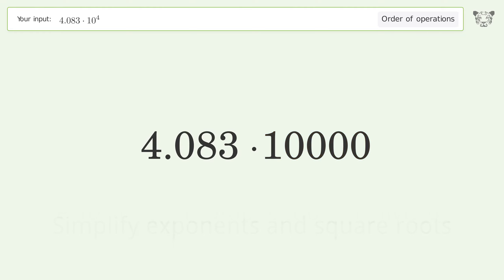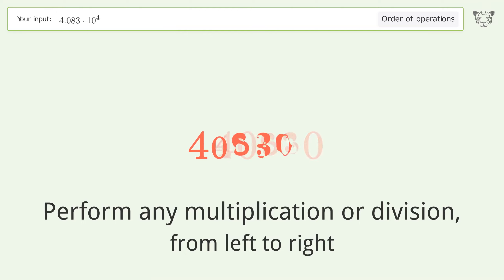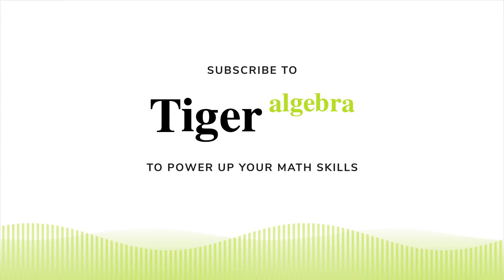Simplify exponents and square roots: 10 to the power of 4 equals 10,000. Then perform any multiplication or division from left to right: 4.083 times 10,000 equals 40,830. So the final result is 40,830.